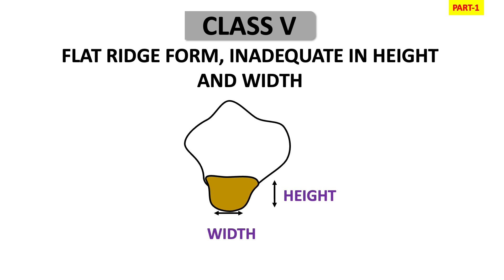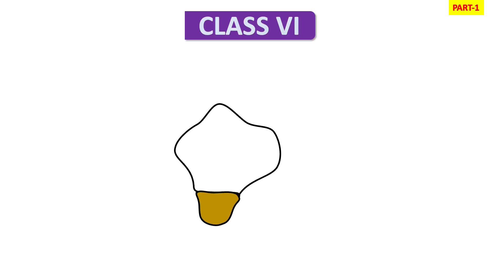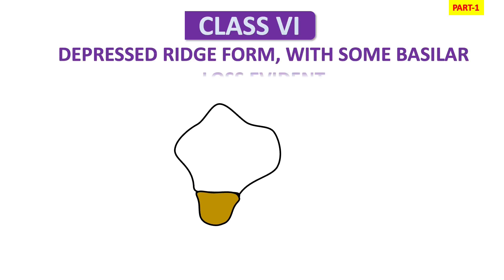In Class 4, Class 5, and Class 6 type ridges we are going to use the McCord technique. The second option is the all-green technique. In this video I'm going to tell you the McCord technique, and in the next video I'll tell you the all-green technique. Both are very good and easy techniques to take an impression in severely resorbed ridges and obtain retention.